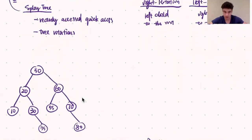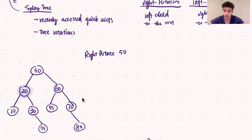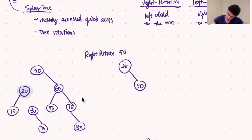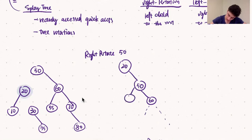On the left here you'll see a tree rooted at 50. We're going to rotate 20 to the root, therefore we're going to do a right rotation of 50. To do this rotation, we first break off the left child of 50, which gives us a subtree rooted at 20. Then we break off the right child of 20, which gives us a subtree rooted at 30. We rearrange the tree such that 20 is at the root and 20's right child is 50, with 50 maintaining the same right subtree but now the left subtree of 50 is the subtree rooted at 30 that we broke off earlier.